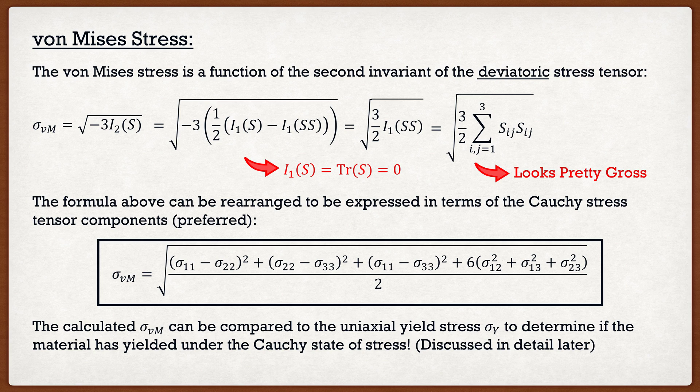This calculated von Mises stress can be compared to the uniaxial yield stress. So if given a 3D state of stress represented by a Cauchy stress tensor, we can ask: will this material yield if the yield strength is 400 MPa? Substitute the Cauchy stress tensor to find the von Mises stress, then compare it to the yield stress. If the von Mises stress is 600 MPa and the yield stress is 400 MPa, it does yield. If the von Mises stress is less than the yield stress, it does not yield.